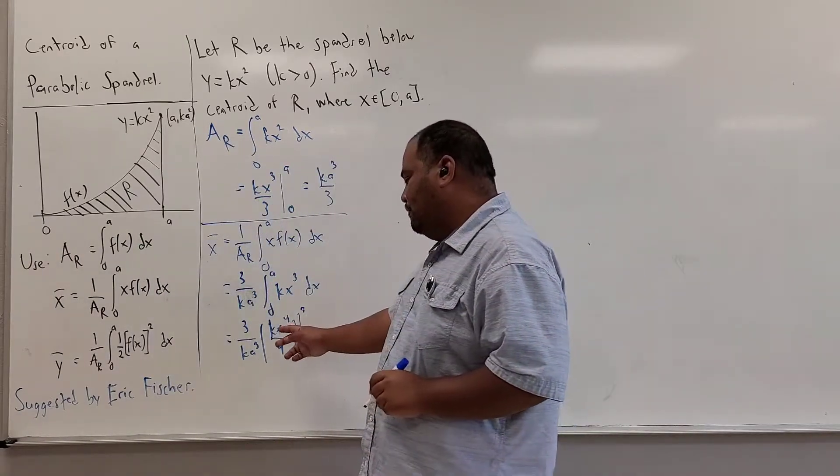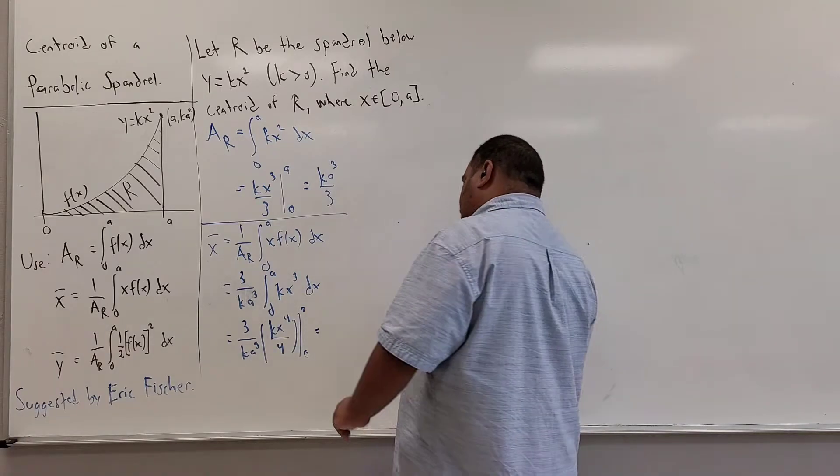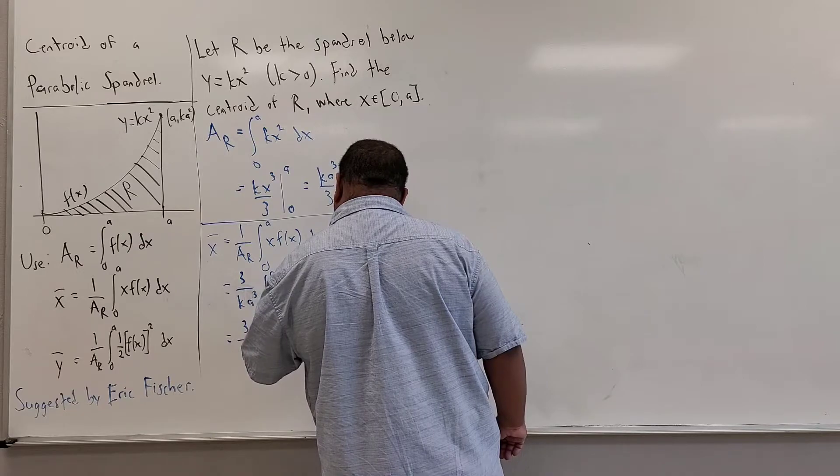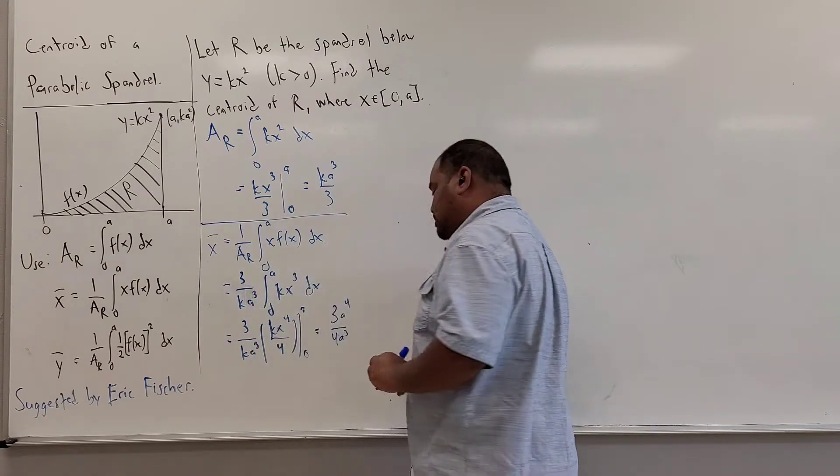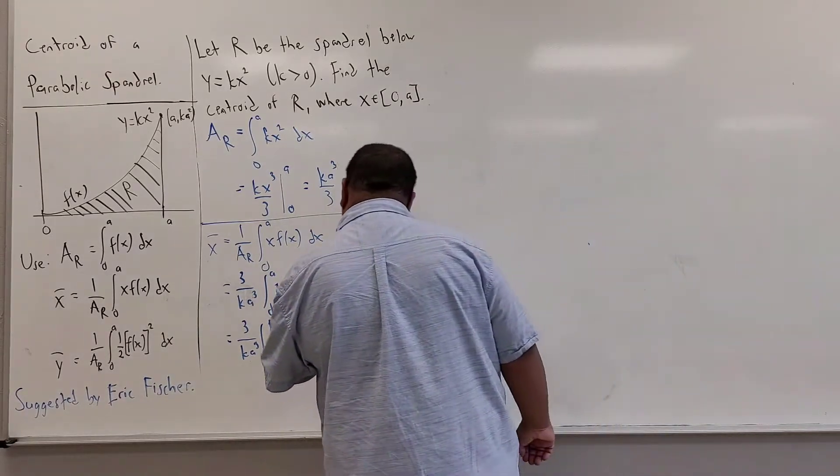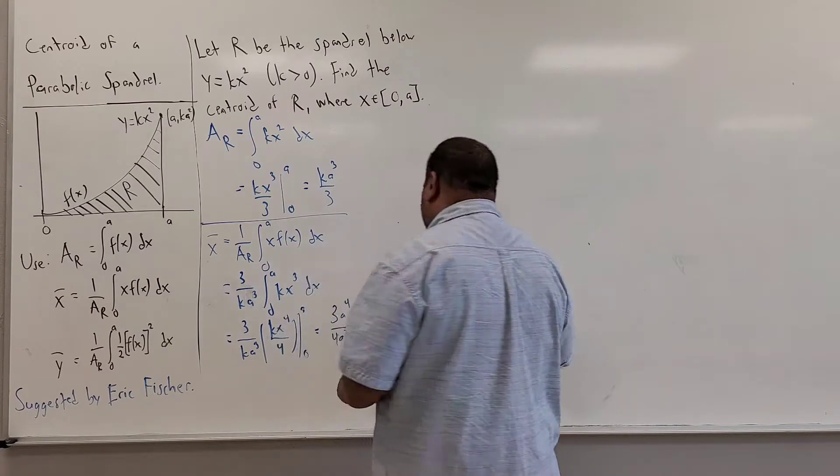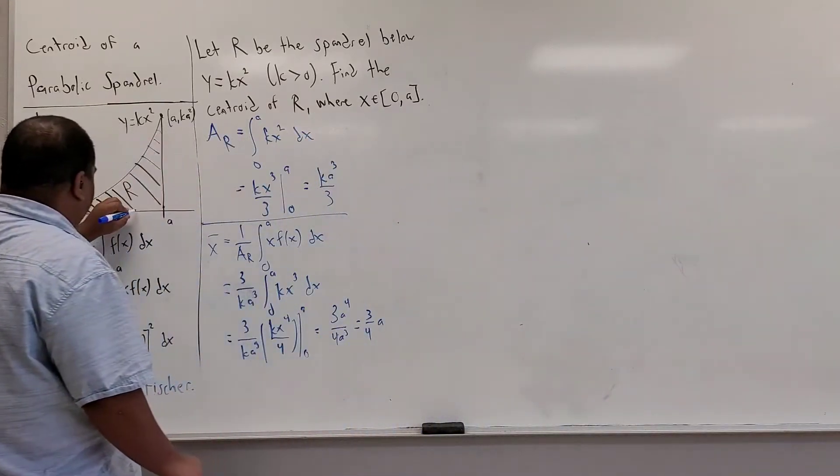And what we'll see here is, well first the k's will cancel. And so I'll have 3 a to the fourth over 4 a cubed, and now I'll see a to the fourth divided by a cubed is just a. So the x-coordinate of the centroid is 3 quarters a. So that'll be marked about here somewhere.